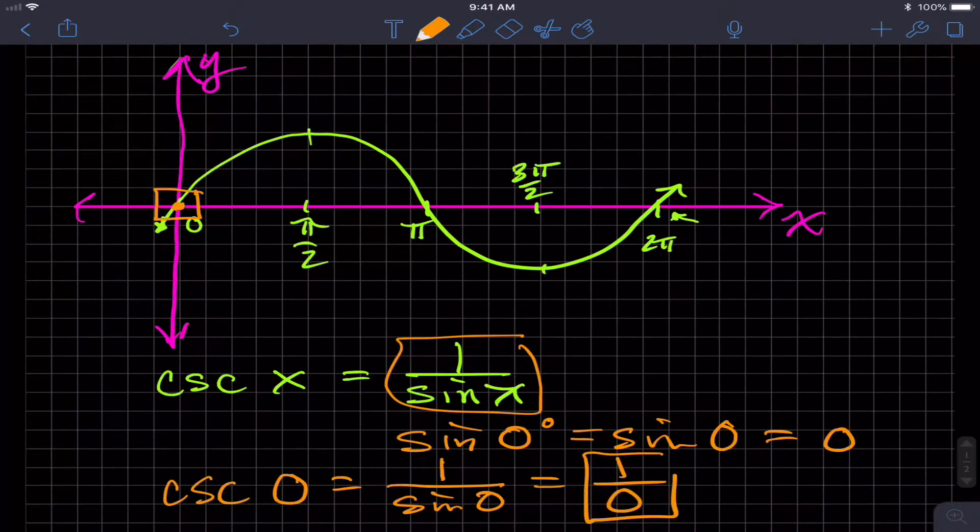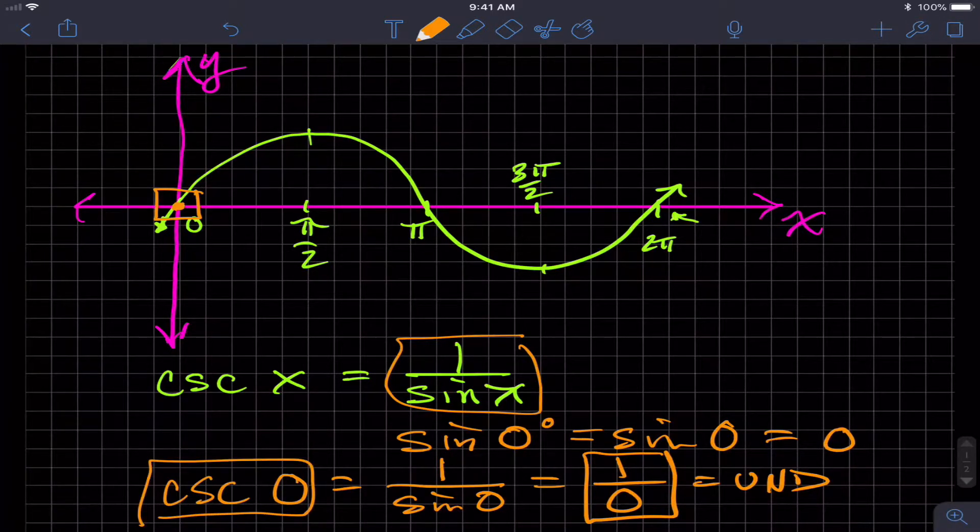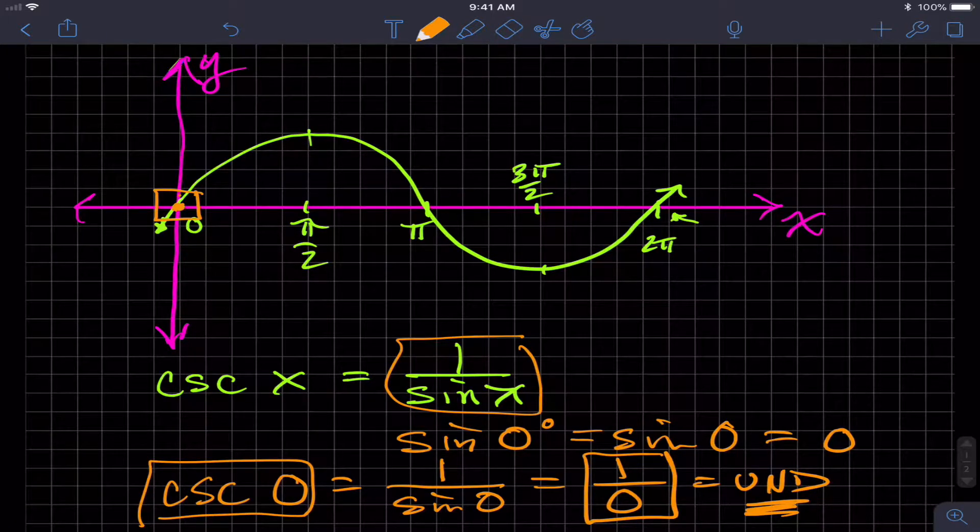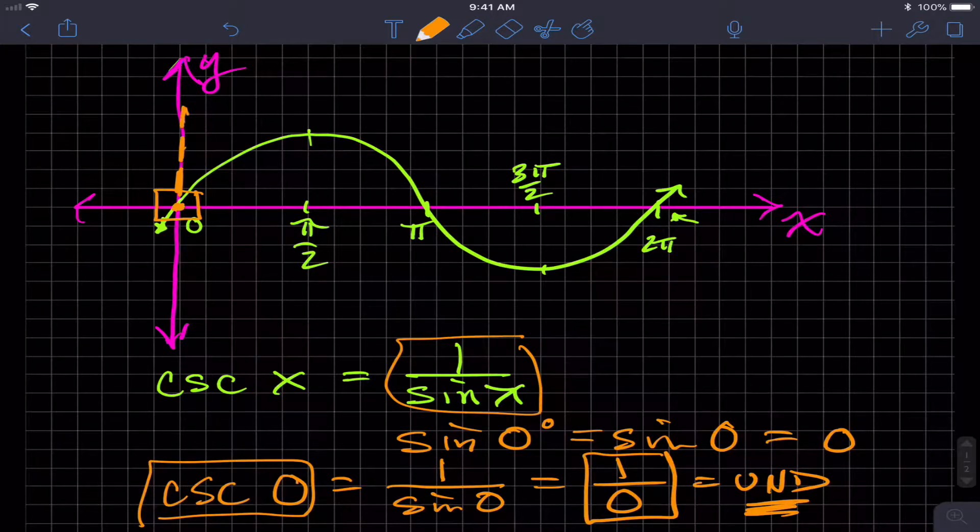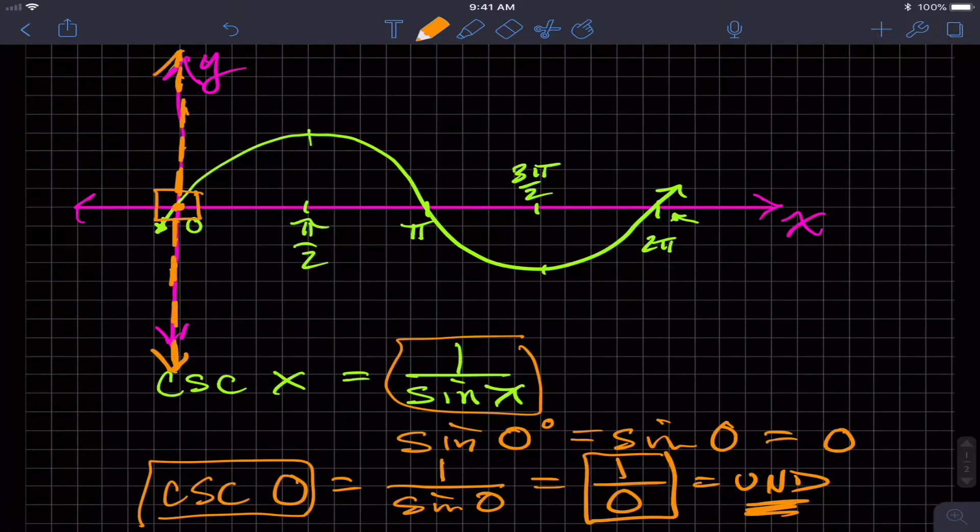Well, hopefully we recall that one over zero is undefined, which means when I go to plot a point on the cosecant curve, y equals cosecant x, when x is zero, I go to plot a point and I can't because I don't have a y value that goes with it. I have an x value, the angle's zero, but I don't have a y value. So you end up getting, remember with rational functions, you end up getting an asymptote here.